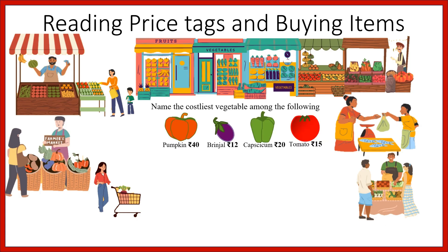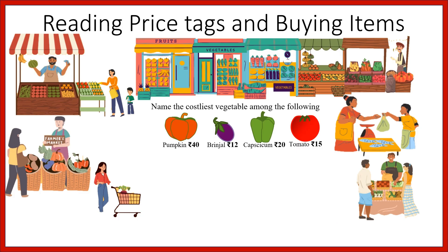I'll show you some vegetables here. You have to name the costliest vegetable among these: pumpkin costing 40 rupees, brinjal 12, capsicum 20, and tomato 15. Out of these, the costliest is the pumpkin.